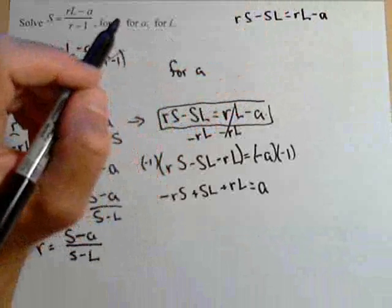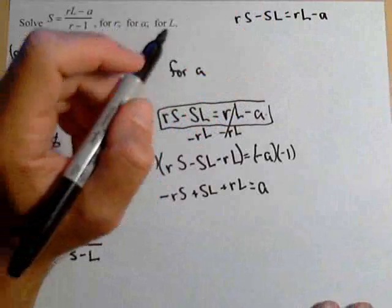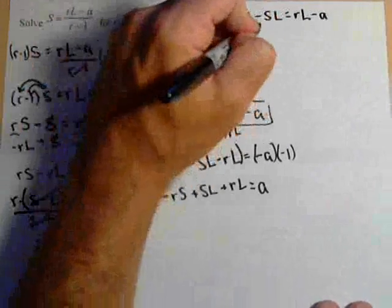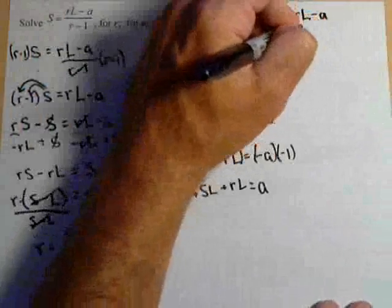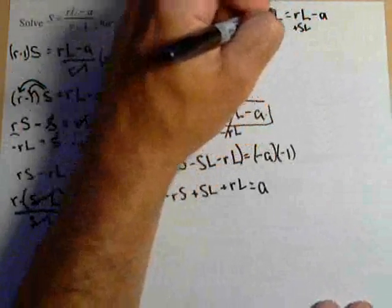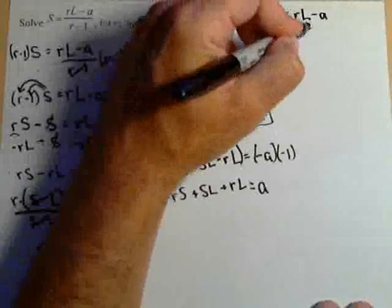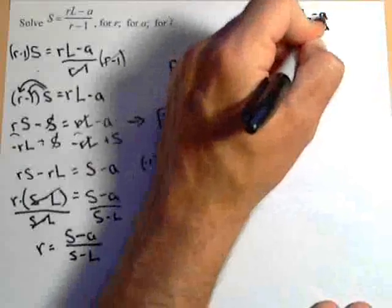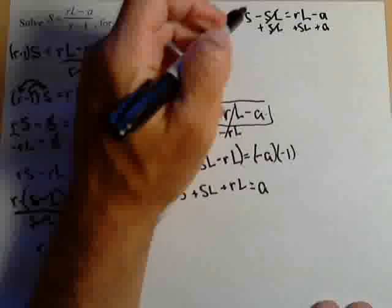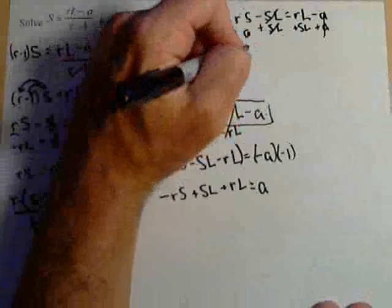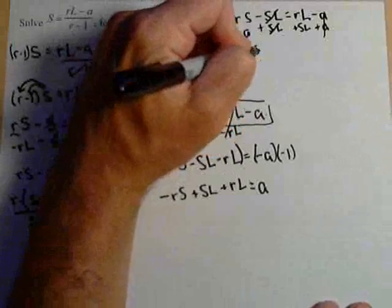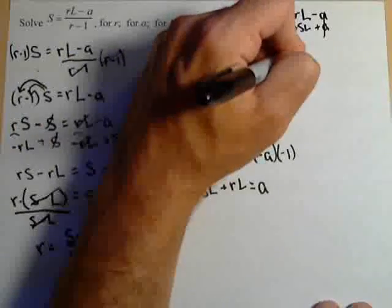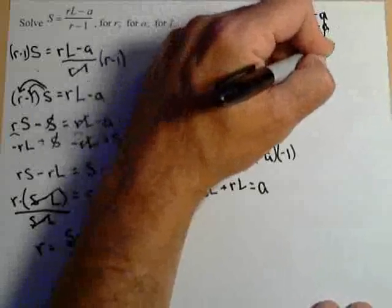Now we do have two L's in there. So we've got to get them on the same side like we had to with the R's. So let's add SL to both sides. That gets rid of it on that side and we'll put those two on the same side. And we'll add A, because it does not have an L, to get rid of it on this side. So we have RS plus A equals RL minus SL.